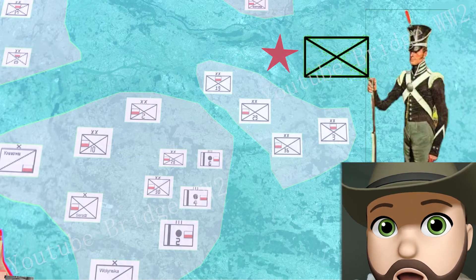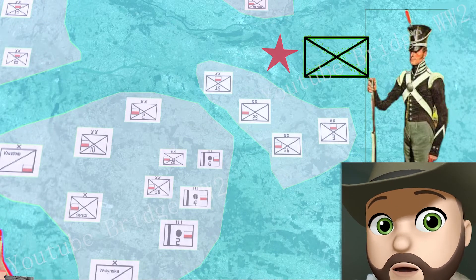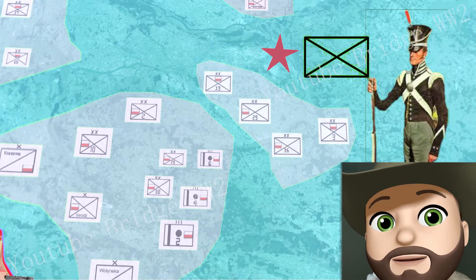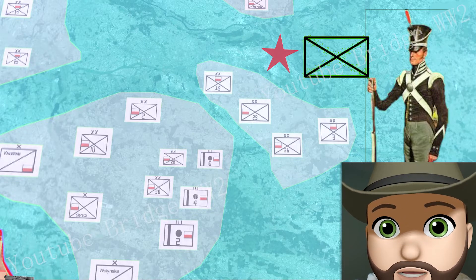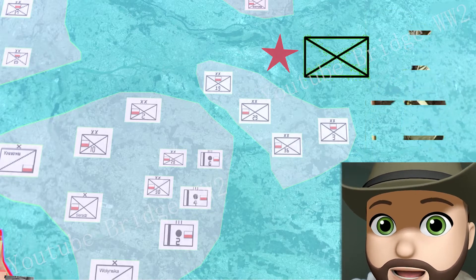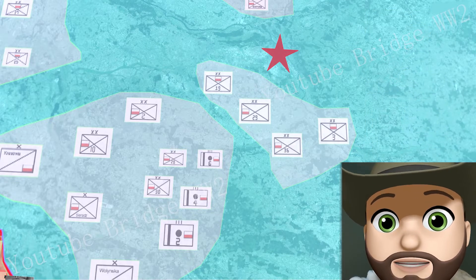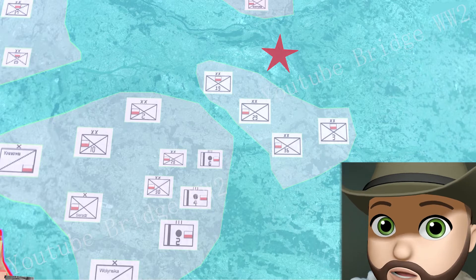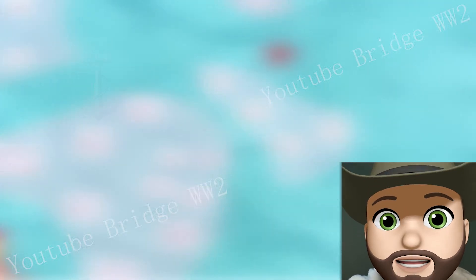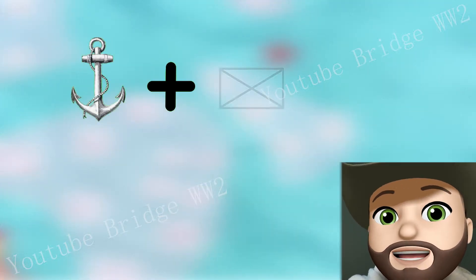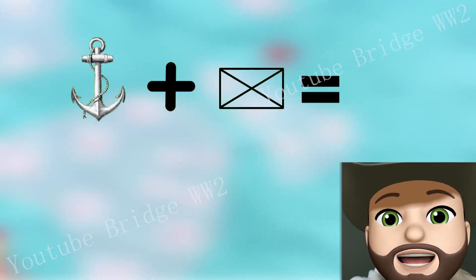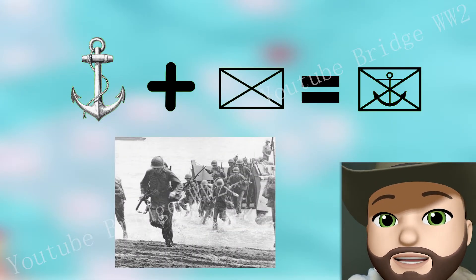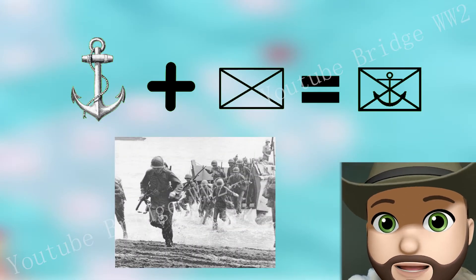Put an X in a rectangle to represent infantry. The two slashes in the logo represent the bullet belts carried by the soldiers. On this basis, we can further classify the functions of infantry. If an anchor is added to the infantry, this is the mark of the Marine Corps.